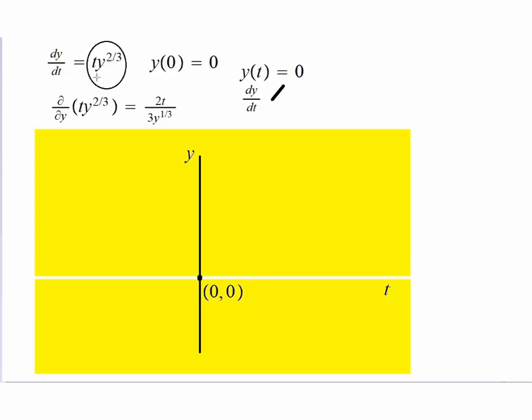Why? Because dy/dt, this quantity is zero for y(t) equals 0, as well as if you substitute y equals zero here, this product will be zero, so the differential equation is satisfied. So in this case we notice that there is one solution, and that is y equals zero.